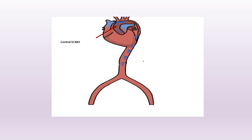In this central VA ECMO animation, we can see that the blood ejected from the heart is mixed with the blood perfused from the ECMO. In this configuration, if the heart is ejecting oxygenated blood, it will mix with the oxygenated blood from the ECMO, so there will be no adverse effect on perfusion of the coronaries and cerebral circulation.